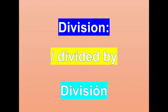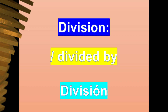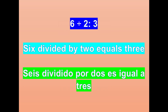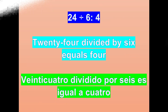Division. Para las divisiones, vamos a decir 'divided by'. Six divided by two equals three. Twenty-four divided by six equals four.